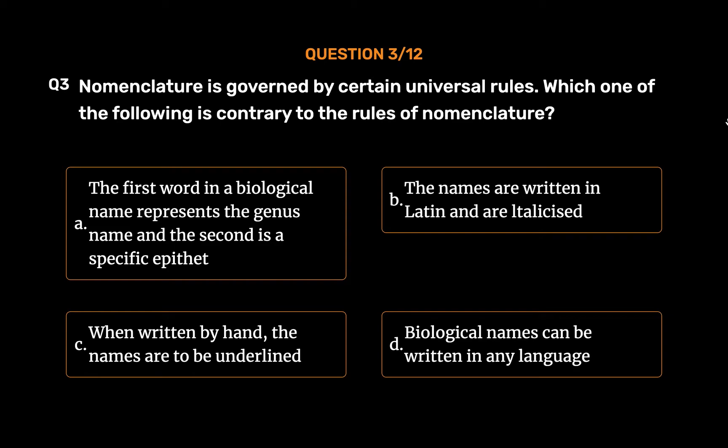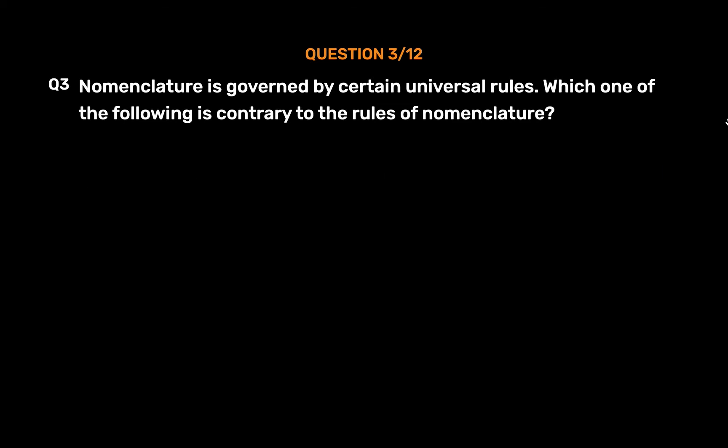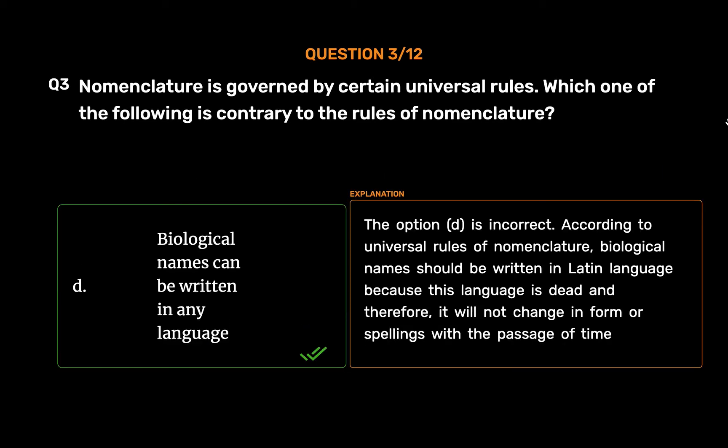The correct answer is Option D: Biological names can be written in any language. Option D is incorrect. According to universal rules of nomenclature, biological names should be written in Latin language because this language is dead and therefore it will not change in form or spellings with the passage of time.